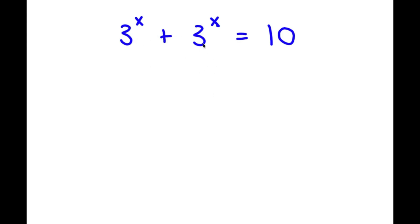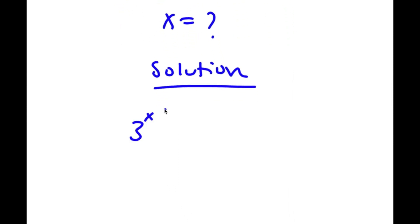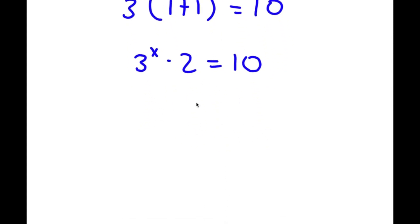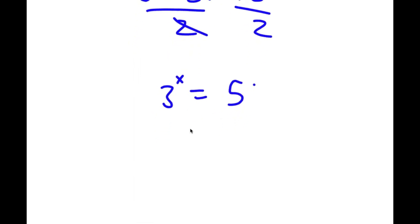In this problem, I have 3 to the power of x plus 3 to the power of x is equal to 10, and I want to find the value of x. I'm going to start by factoring out 3 to the power of x from the left-hand side. So I have 3 to the power of x times 1 plus 1 is equal to 10. Since 1 plus 1 equals 2, I now have 3 to the power of x times 2 equals 10. Dividing both sides by 2, I get 3 to the power of x equals 5.